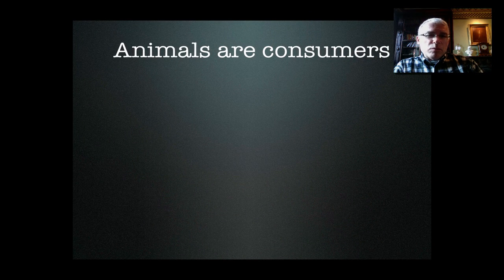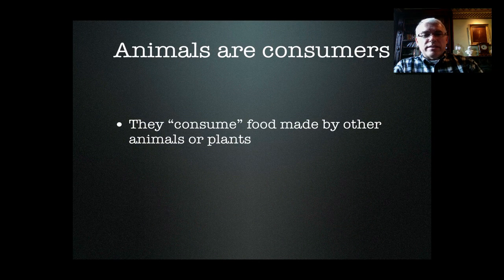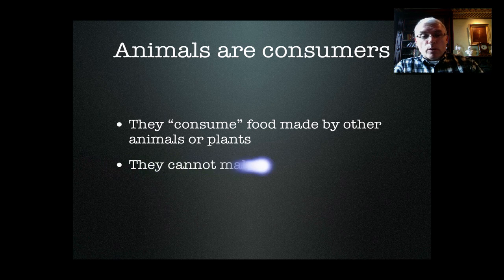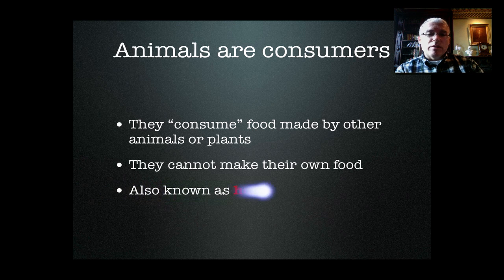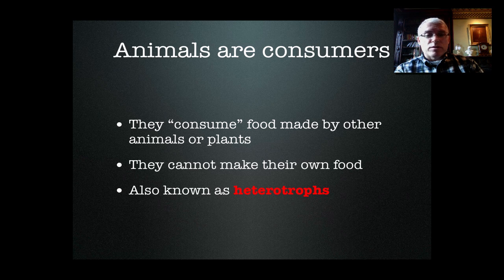On the other hand, animals are consumers, which means that they must eat food that other animals or plants have produced somewhere else at an earlier point in time — they can't make their own food. So this means they're heterotrophs. The word hetero means different, so heterotrophs or consumers are organisms that have to eat food made by a different organism because they can't make it themselves.